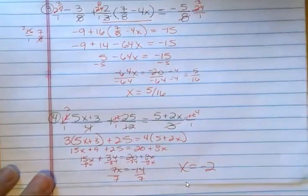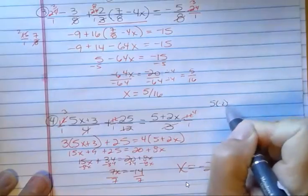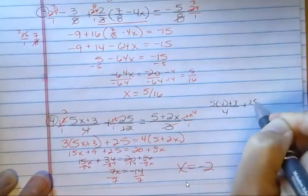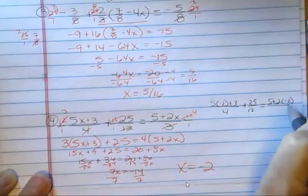And since we're to the very end of the video, I'll do this one for you. That is 5 times negative 2 plus 3 over 4 plus 25 over 12 should be 5 plus 2 times negative 2 over 3.